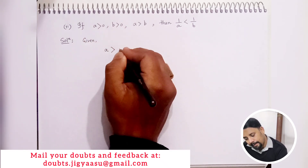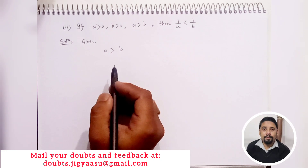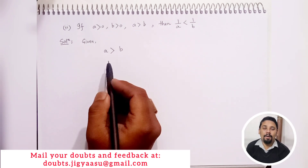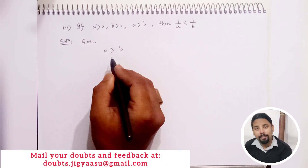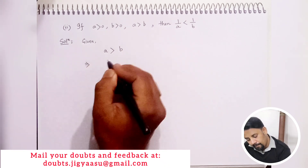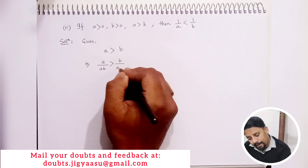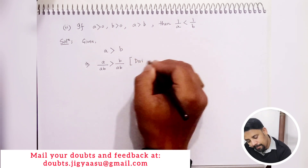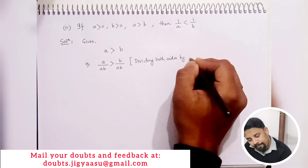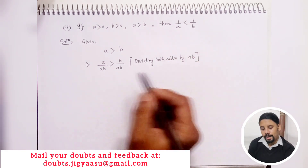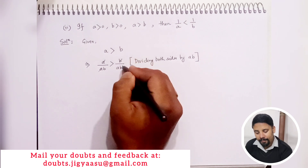Given a is greater than b, we will use the properties of inequality. We know we can divide the same number on both sides of the inequality. So we divide both sides by ab. This gives us a divided by ab is greater than b divided by ab. We can then cancel out the common factors: a cancels and b cancels.